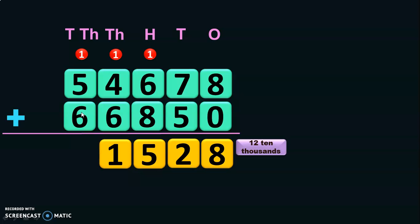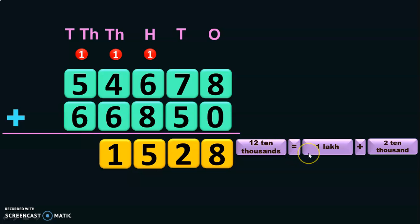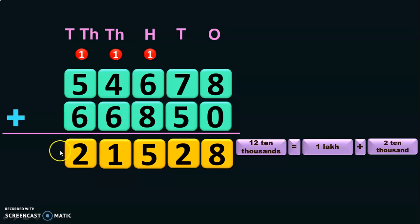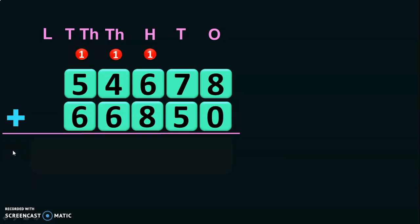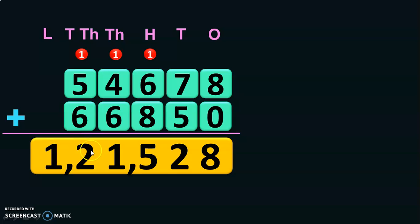Now you will have to regroup the digits in the ten-thousands place because you cannot have 2 digits in the same place. Regrouping 12 ten-thousands you will get 1 lakh plus 2 ten-thousands. So the 2 ten-thousands will be retained in the ten-thousands place and the 1 lakh will be moved to the sixth place value — the new place value, lakh. The sum of the two five-digit numbers in this case gives you a six-digit answer: 1,21,528.